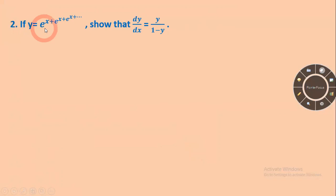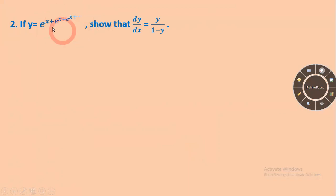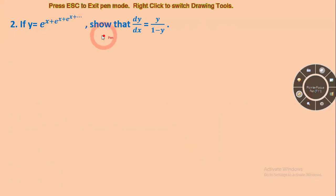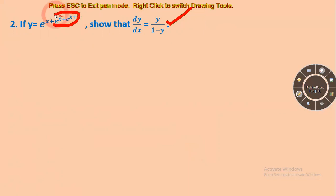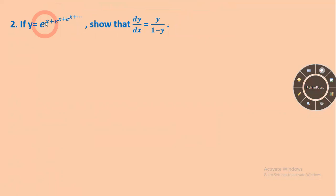Another example: if y equals e^x plus e^x plus e^x plus dot dot dot up to infinity. Here the series repeats, so the repeating part equals y. Therefore y equals e^(x plus y), since the exponent contains x plus the repeating y.